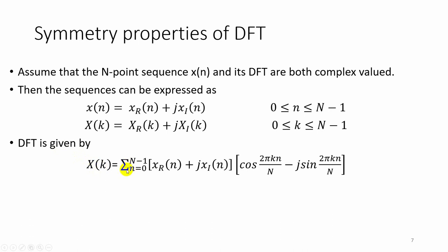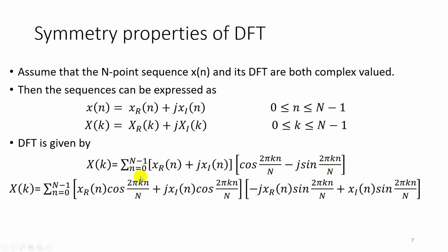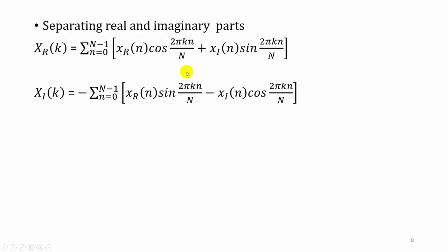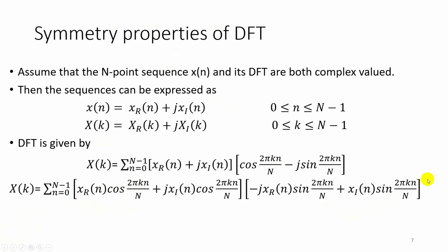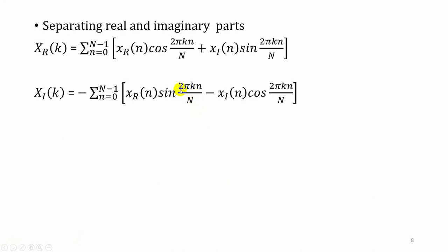The DFT is given by the summation from n equal to 0 to N minus 1, substituting the real and imaginary parts of x of n, times e to the power minus j 2 pi k n by N. This exponential represents cos theta minus j sin theta, so we expand it as cos(2 pi k n / N) minus j sin(2 pi k n / N). Multiplying these terms, the first term is xr of n times cos(2 pi k n / N), the second term is j times xi of n times cos(2 pi k n / N), the third term is xr of n times minus j sin(2 pi k n / N), and the last term involves j squared equals minus 1, giving plus xi of n times sin(2 pi k n / N). Separating real and imaginary parts, the real part contains the cosine and sine terms, and the imaginary part contains the remaining sine and cosine terms.